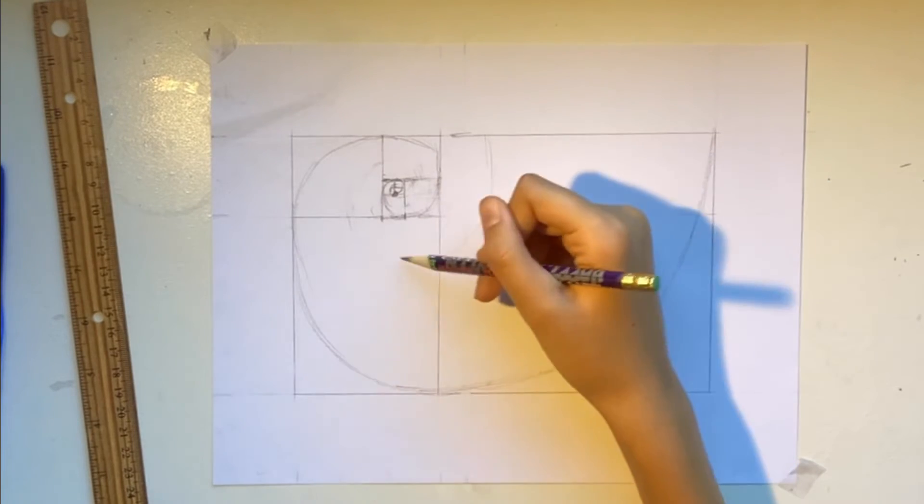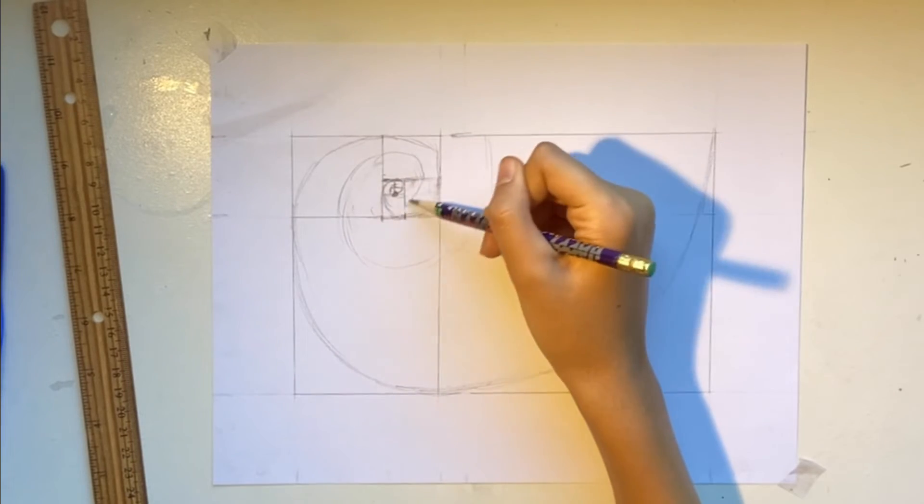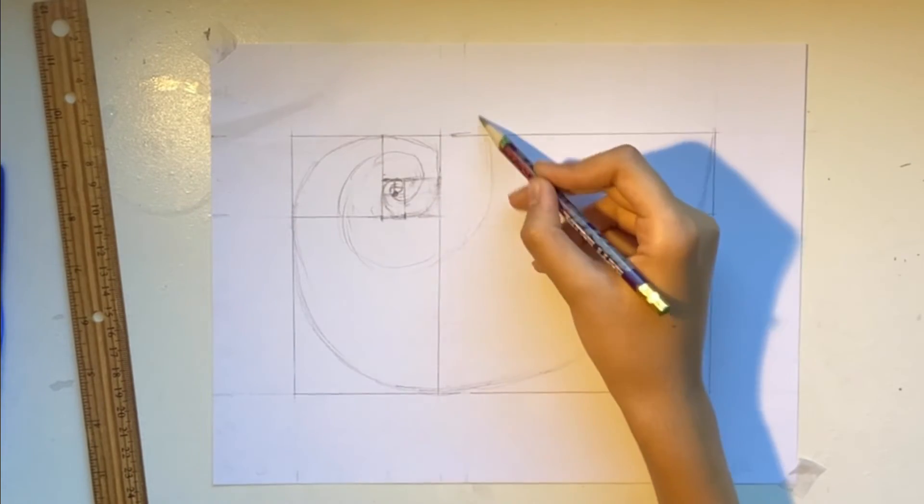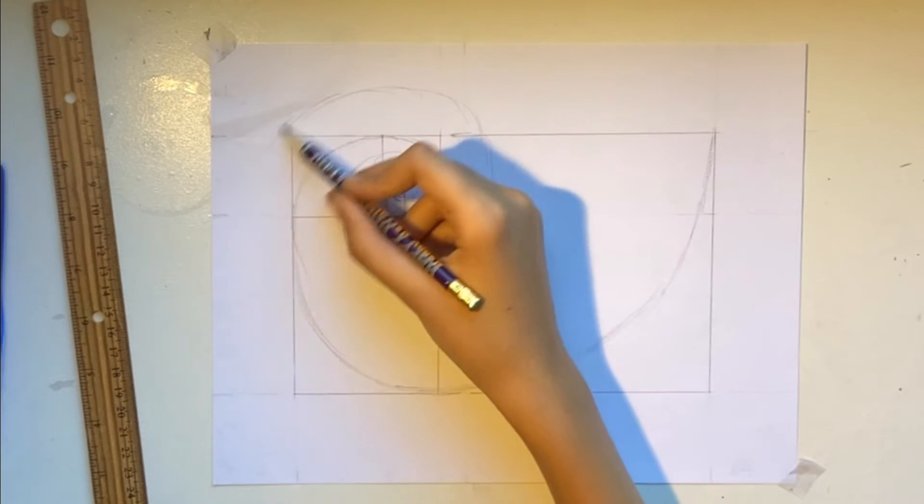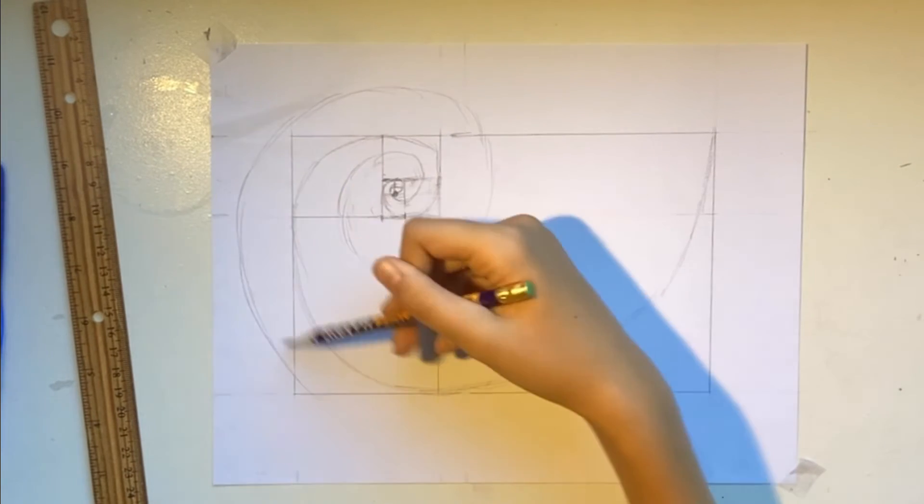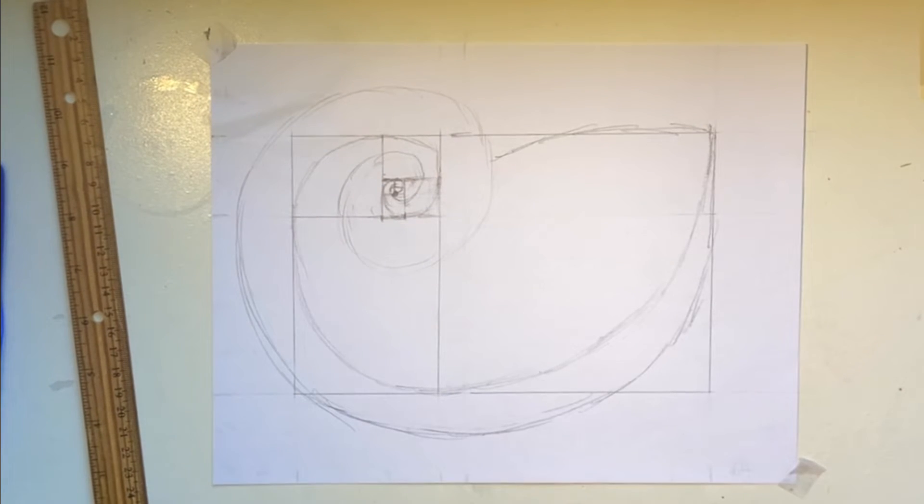Now, we're drawing another layer of our spiral around the spiral that we've already drawn. Your finished sketch should look something like this.